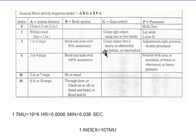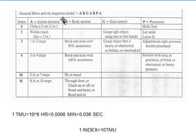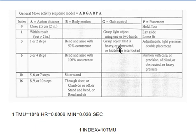This slide shows the standard MOST chart, which is generally used to calculate standard time. Here you will find the general movement activity of the sequence model: A, B, G, A, B, P, and A. This is used as basic MOST while calculating standard time using the MOST technique.